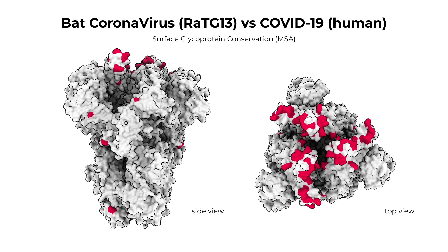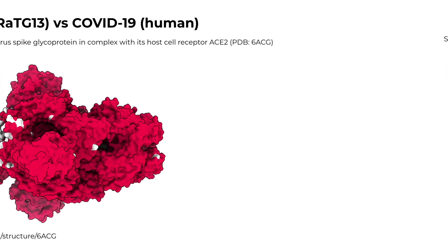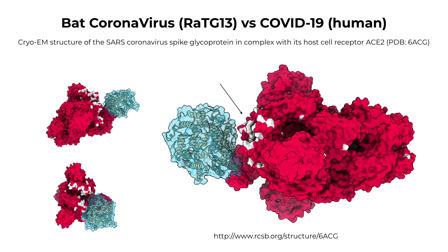You will find that multiple sequence alignment can be a powerful tool to understand viral adaptations that occur between animals and humans. Additionally, you'll study the relationship between viral and host proteins, such as the trimeric SARS coronavirus surface spike glycoprotein.